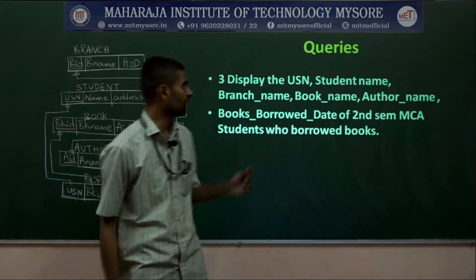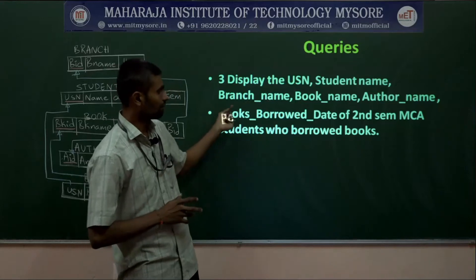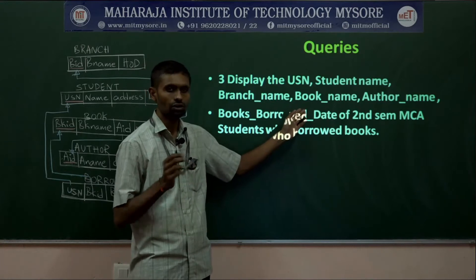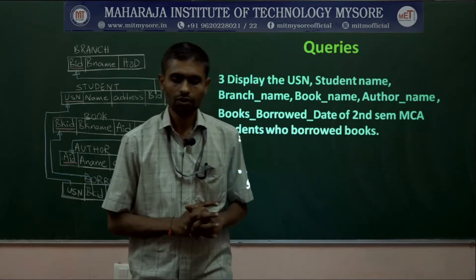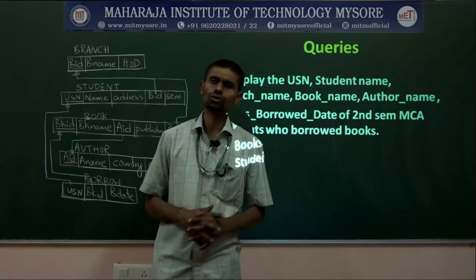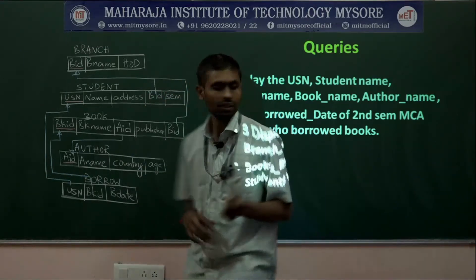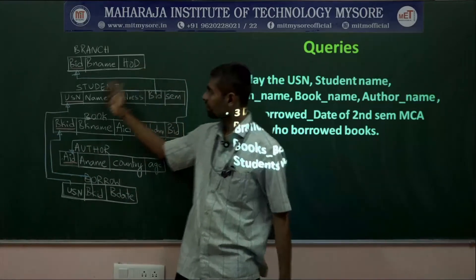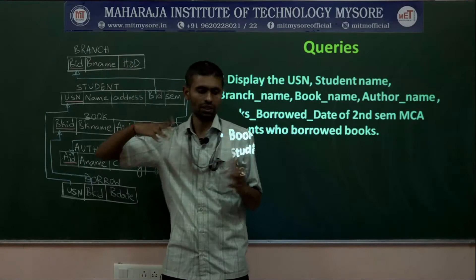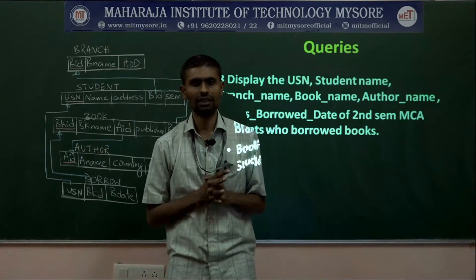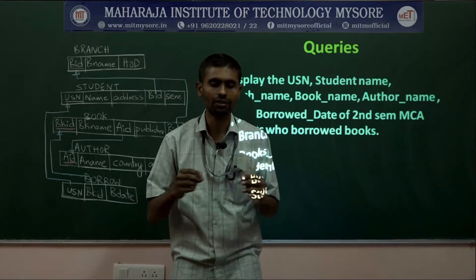The third query asked us to display student details along with branch name, books borrowed, author name, publisher, for students in second semester MCA. This requires joining multiple tables. For student details and branch name, we need the student and branch tables, joined by student.branch_ID = branch.branch_ID. We also used the aliasing concept to simplify condition writing between tables.